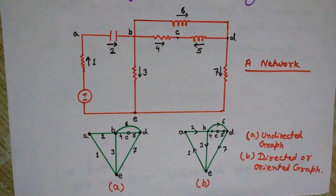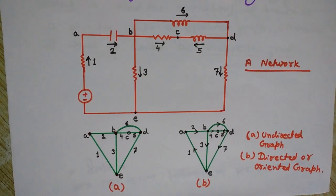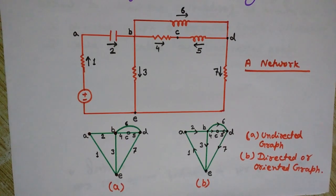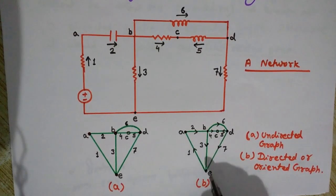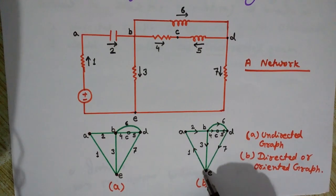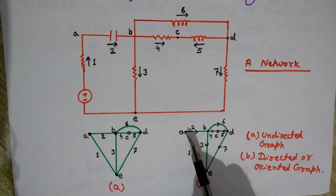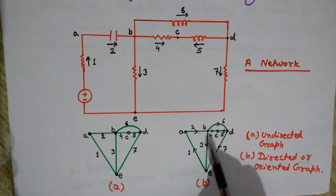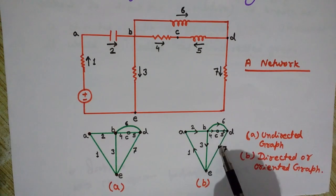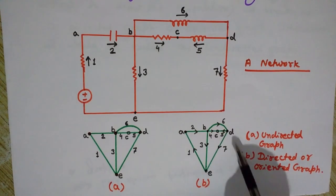We call a graph a connected graph if and only if there is a path — directly or indirectly — between every pair of nodes. We have nodes A, B, C, D, E — these are five nodes — and there are seven branches total in this graph.